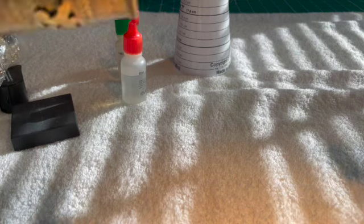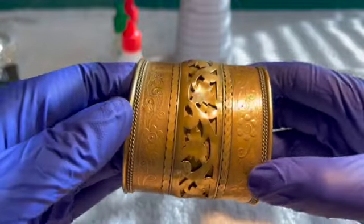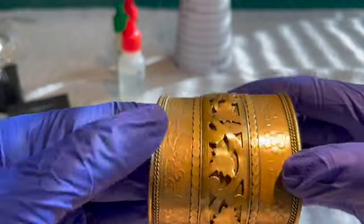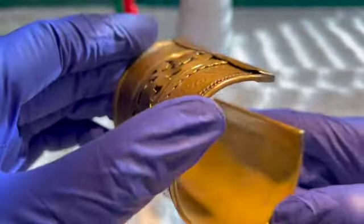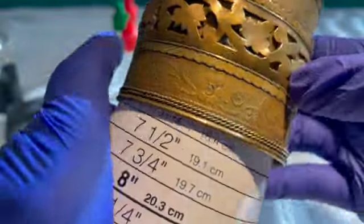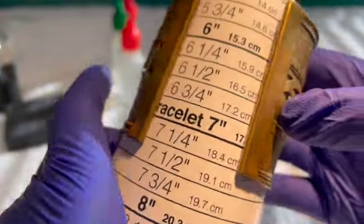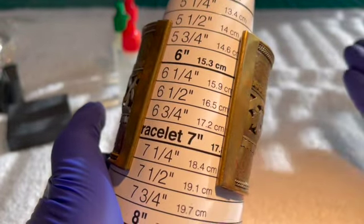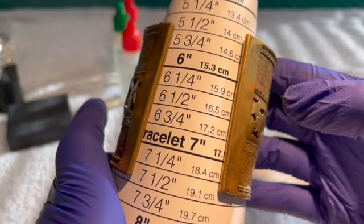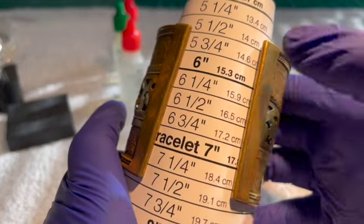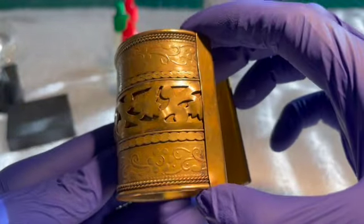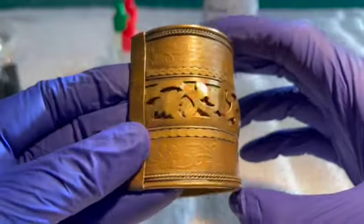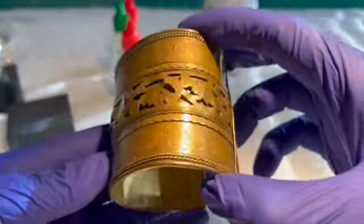Then we have this bronze bracelet, really pretty leaf pattern, leaf and flower pattern. No maker's mark. It's a cuff style. Let's figure out the size. There's such a range, if we take the middle it's about a six and a half. If anybody wants this bracelet, absolutely gorgeous bracelet, that'll be seven dollars.